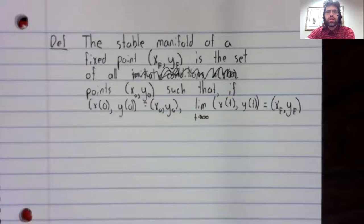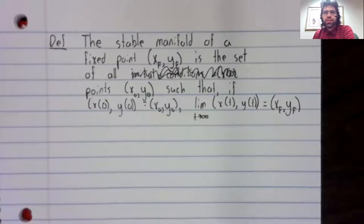Definition. The stable manifold of a fixed point is the set of all points (x₀, y₀) such that if x(0), y(0) equals x₀, y₀, then the limit as t goes to infinity of x(t), y(t) equals the fixed point.